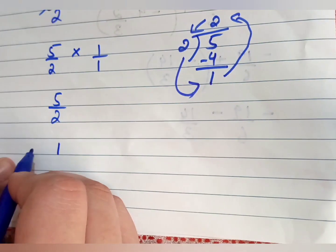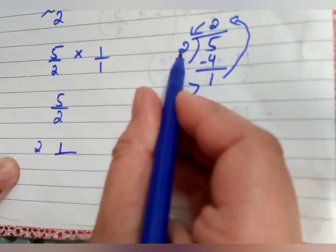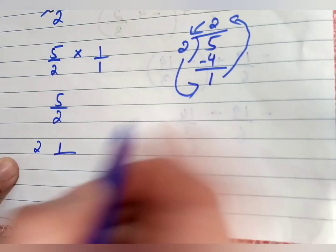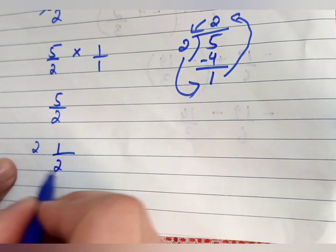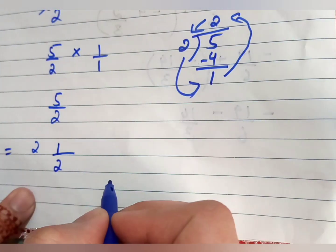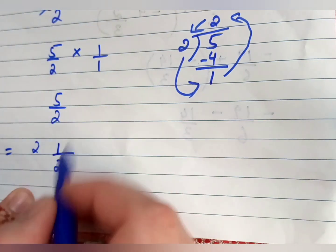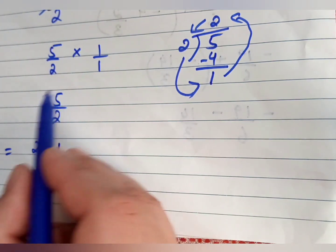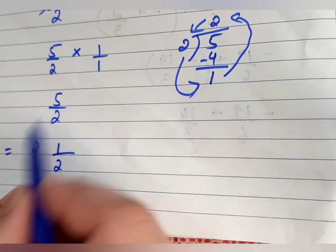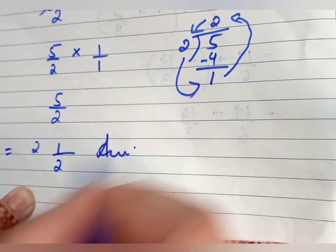Write the remainder as the whole number part, the quotient as the coefficient, and bring the divisor 2 down. So the answer to Part A is 2 and one-half — we've successfully converted the improper fraction into a mixed fraction.